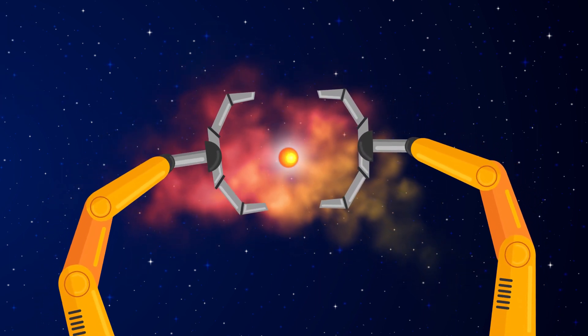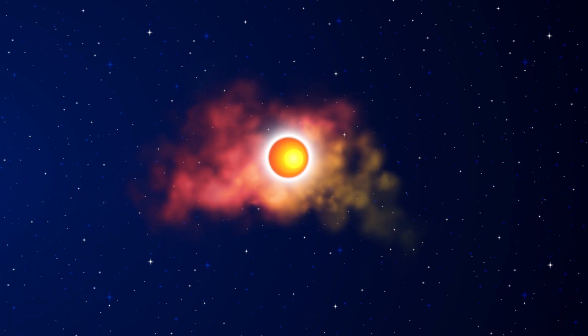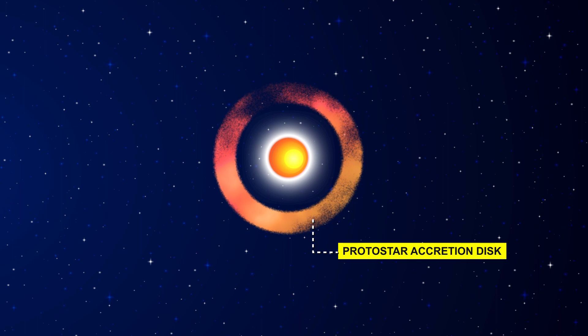You can clearly notice the protostar forming. We have created our very own star. The remaining dust and gas would be useful too, but right now, these would form a ring around the baby star. We call this the protostar's accretion disk.